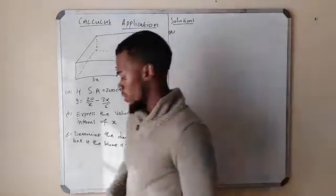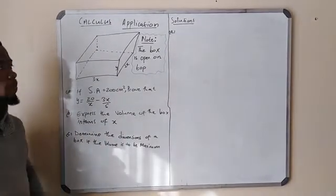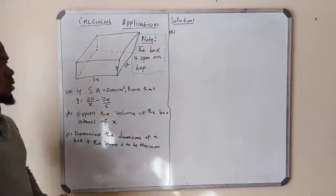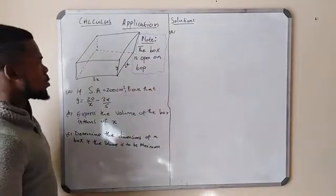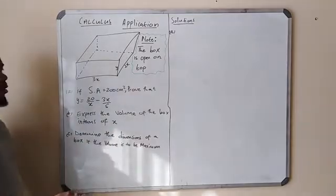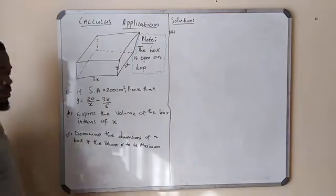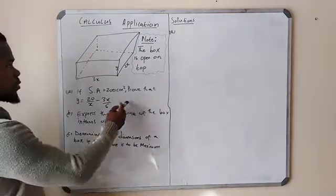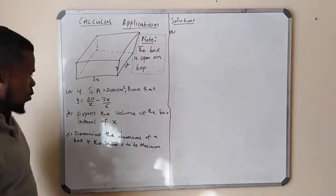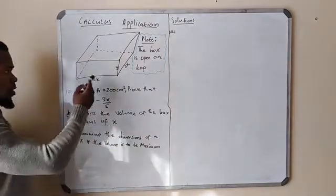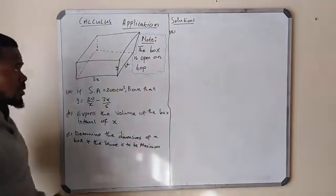Let us look at what we have here — we're still under calculus, application of calculus. We're given a box that is open on top, and it is said that the surface area of the box is 200 centimeters squared. We are required to prove that y equals 20 over x minus 3x over 5, where y represents the height of the box.